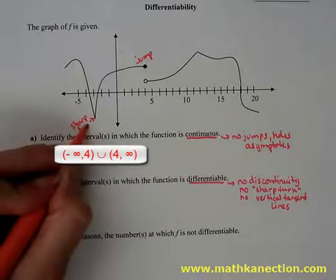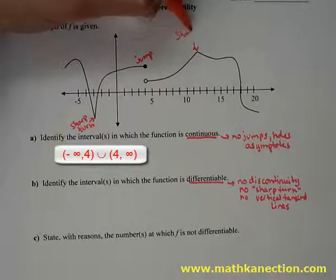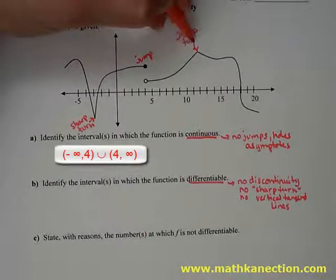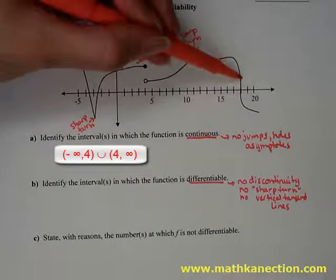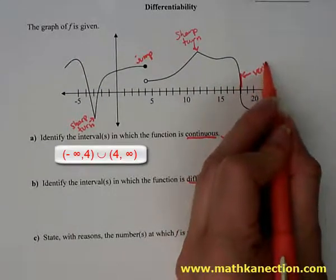At x equals negative 3, we can see there's a sharp turn. Also at approximately x equals 12, we have another sharp turn in the graph. And at about 18, we could draw a vertical tangent line.